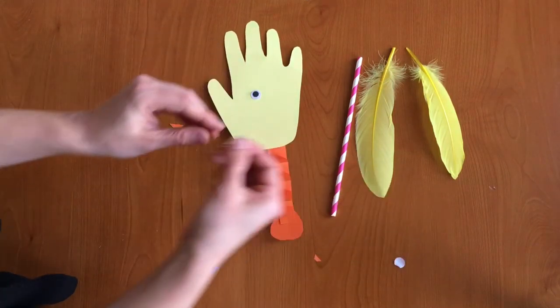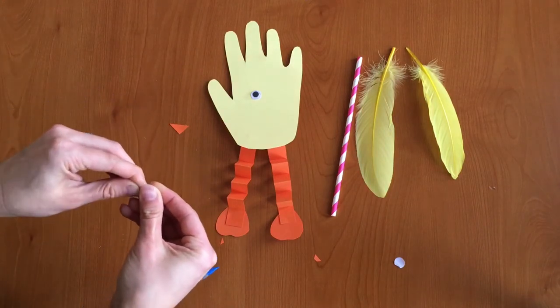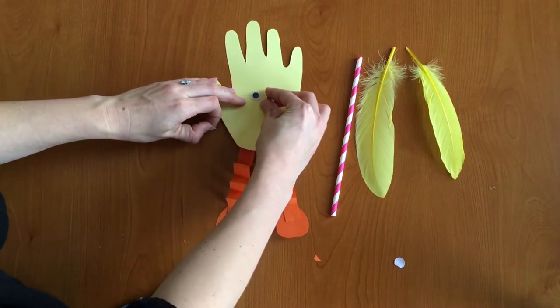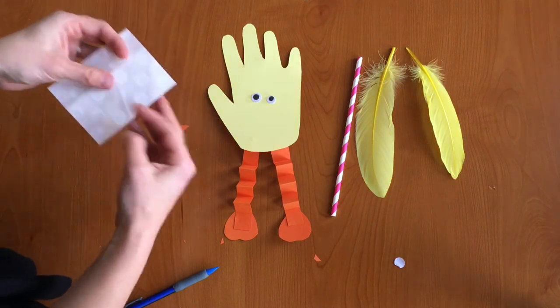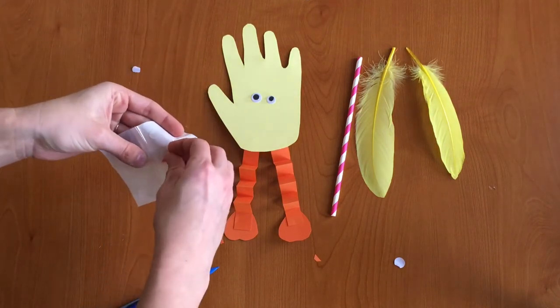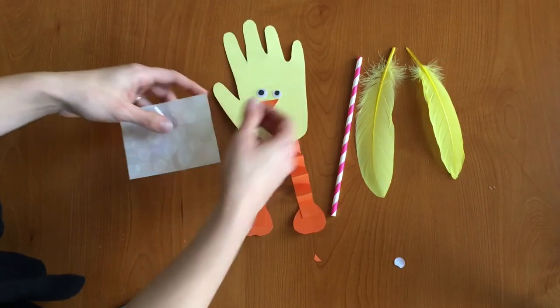And we'll put one eyeball there. One eyeball there. And then another glue dot for the beak. There we go.